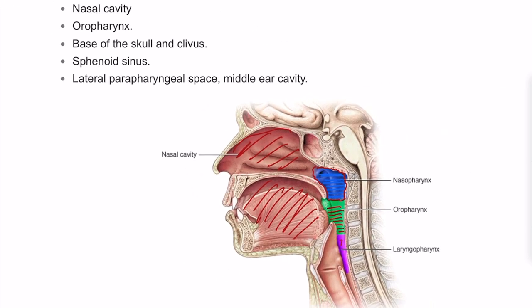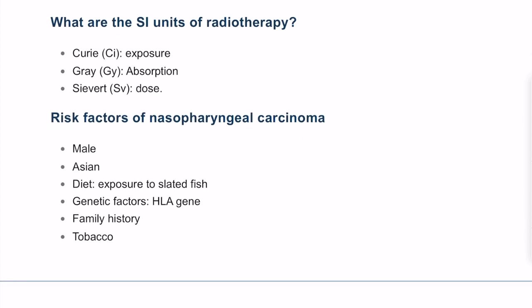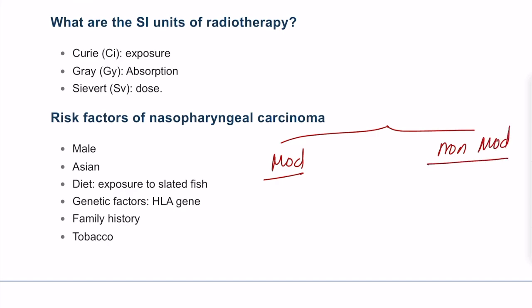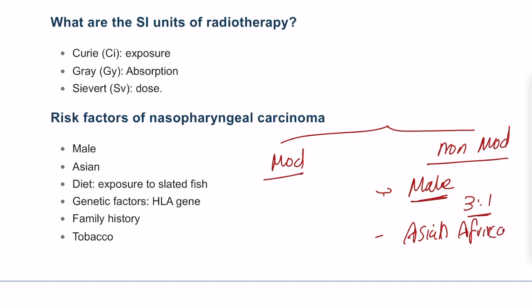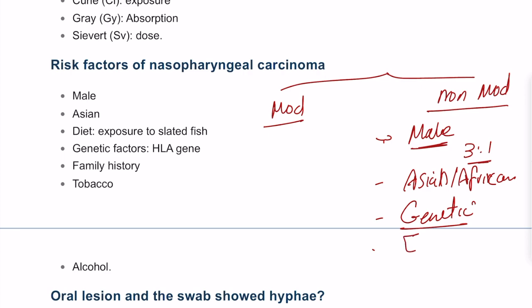This doesn't happen randomly — there are risk factors. Non-modifiable risk factors include: being male (three times higher risk than female), being Asian or African, genetic risk factors, infection with Epstein-Barr virus, and having a family history of nasopharyngeal carcinoma.